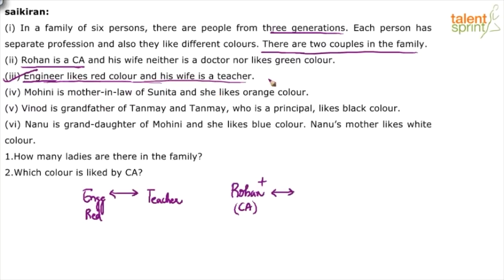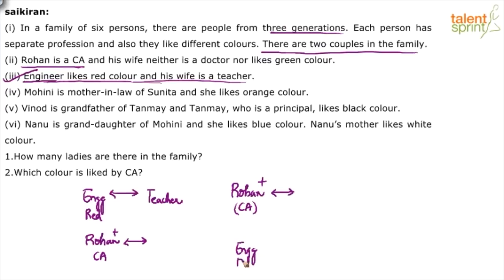Point four: Mohini is the mother-in-law of Sunita and she likes orange color. Since Mohini is the mother-in-law, she should be in the higher generation. In Case 1 we take Rohan below the engineer (CA below engineer), and in Case 2 we take CA above the engineer.